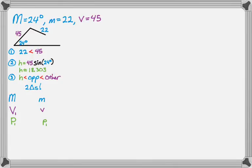And then I have another possible triangle, so I'm going to put little sub 2s on those. And now I'm going to fill in the givens for both of them. So 24 degrees, 22, 45, and then the same in the second triangle.